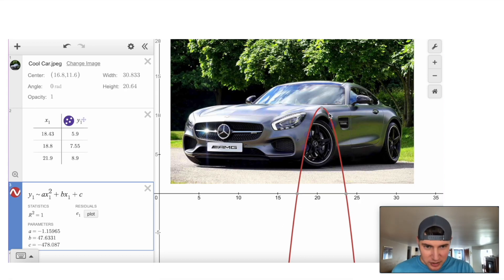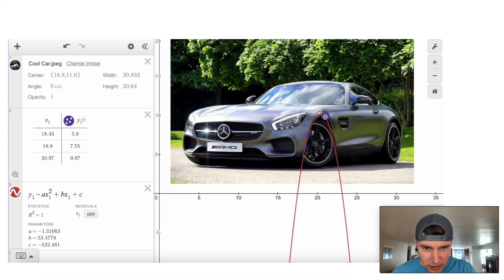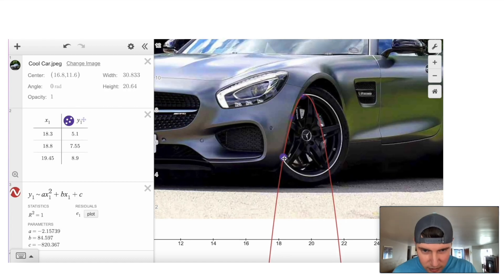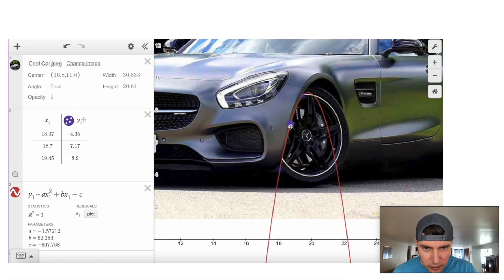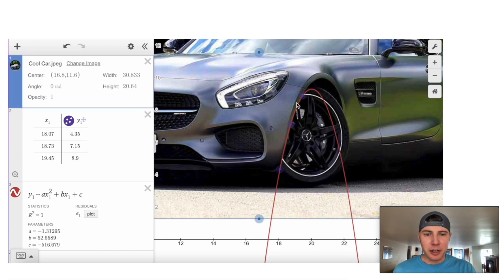And we can see that it gave us a pretty good estimate, but it's a little too steep. So we can drag this until we get a good estimate. Because there's no way we're going to get it actually good on that wheel well. It's not a perfect parabola. So we can get as close as we can and zoom in, bring this down a little bit, go right there. And that looks pretty good. So that looks pretty good for this first part of the wheel well.